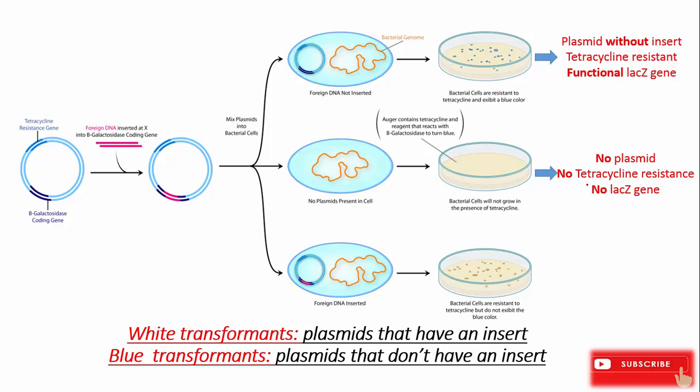In case three, foreign DNA is inserted into the bacterial cells. After growing them on an agar plate, white colonies form.